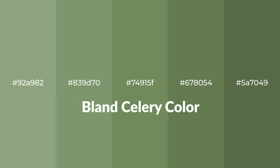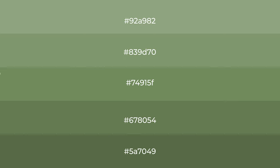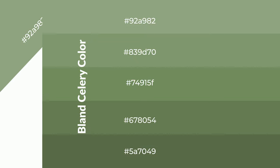To generate tints of a color, we add white to the color, and tints create light and exquisite emotions. To generate shades of a color, we add black to the color, and it is used in patterns, 3D effects, layers, and shades create depth and drama.